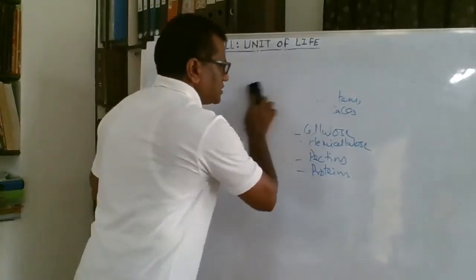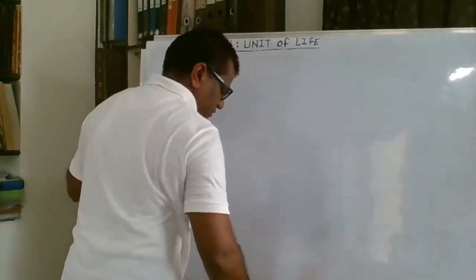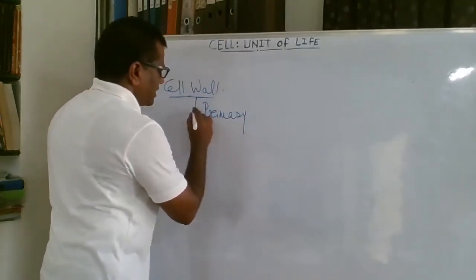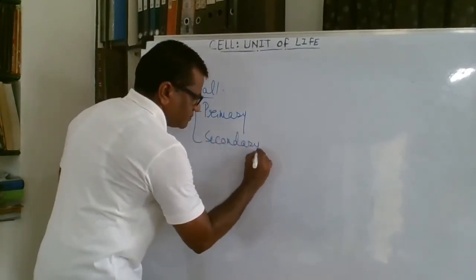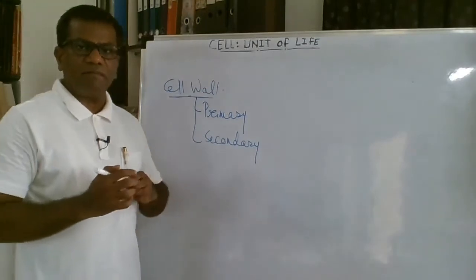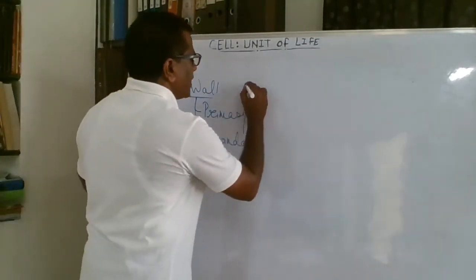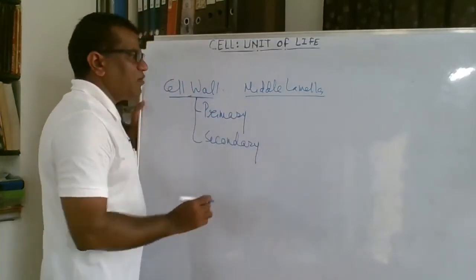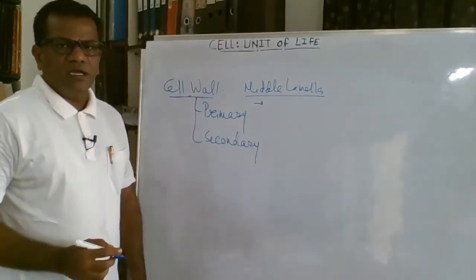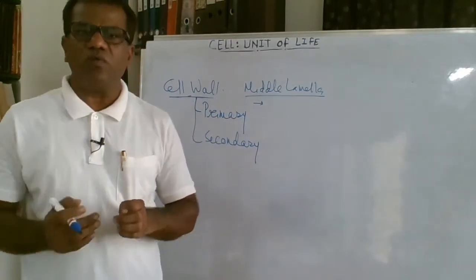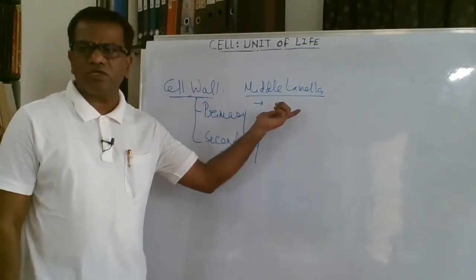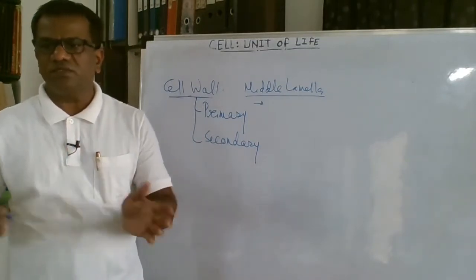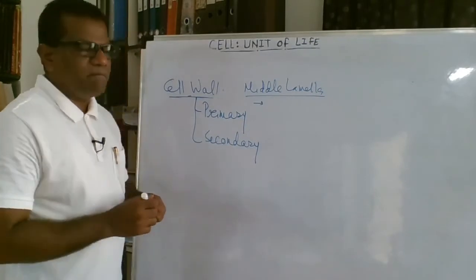Coming to the layers in the cell wall: the cell wall is made up of two layers — the primary cell wall and the secondary cell wall. The cells are basically attached to one another by means of the middle lamella. This middle lamella is an amorphous layer that holds the cells together — not by their cell wall, but by the middle lamella.